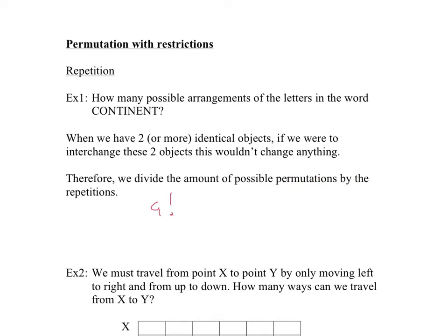Therefore, in this example, we have nine letters. We would divide the amount of possible permutations by the repetitions. Here, technically, you have 9 factorial, which is all the possible letters arranged. But since we have repetitions of letters, we're going to divide by those repetitions. Notice you have three N's, so we're going to divide by 3 factorial. And we also have two T's, so you would divide by 2 factorial. There are no other repetitions: there's one C, one O, one I, one E. Therefore, that's all you would do. This is how you would calculate the amount of arrangements possible with the letters continent.